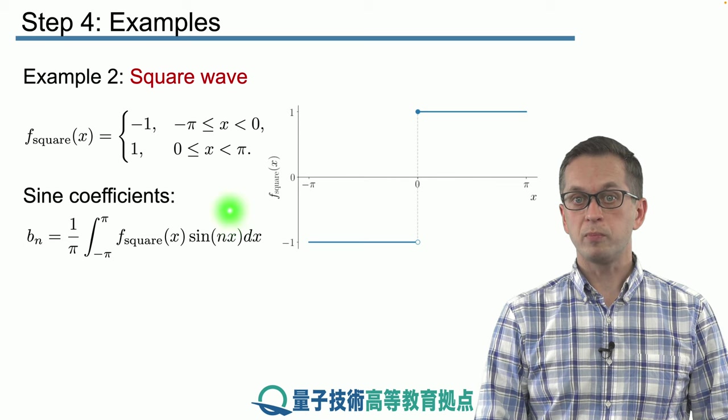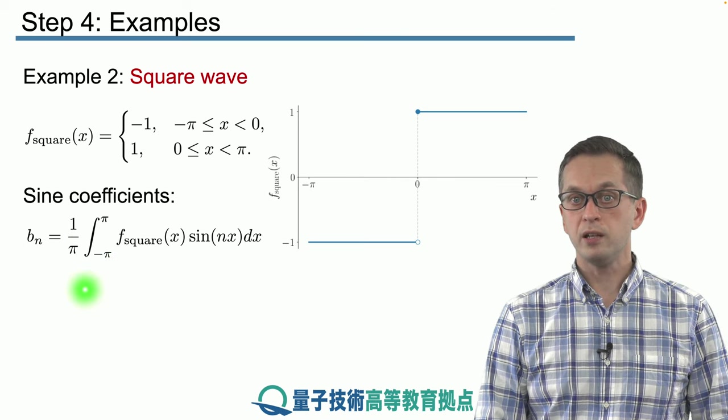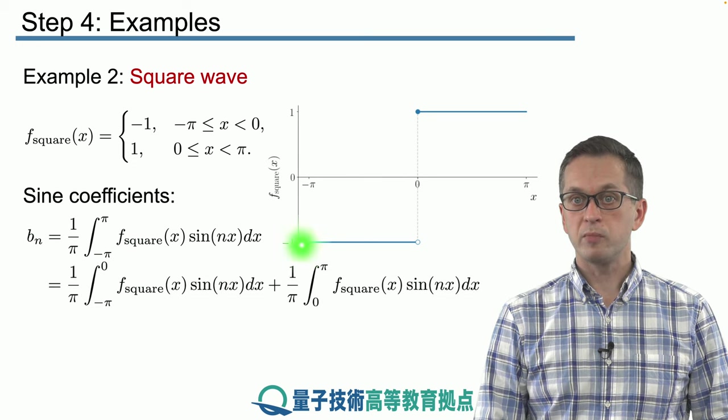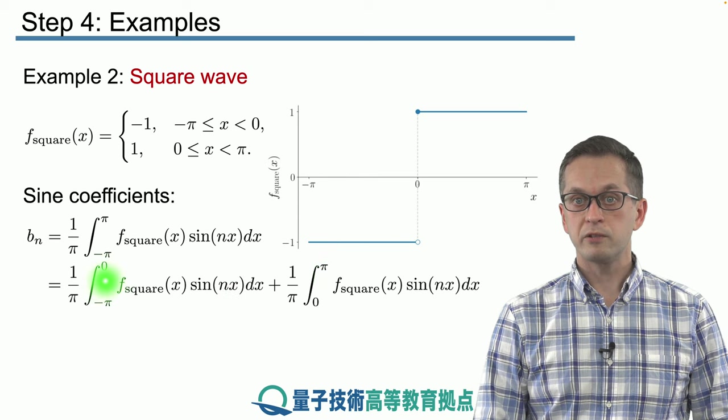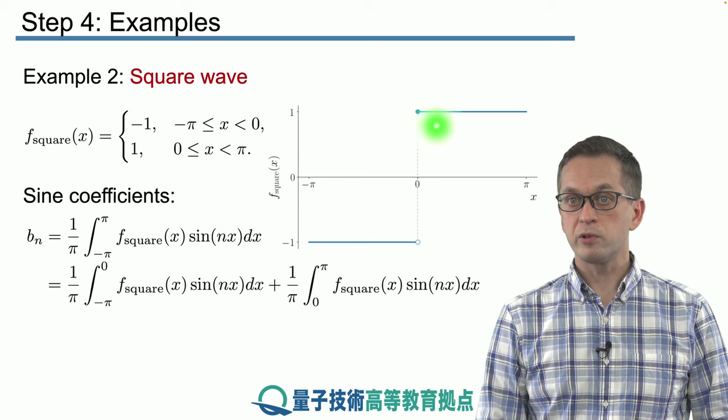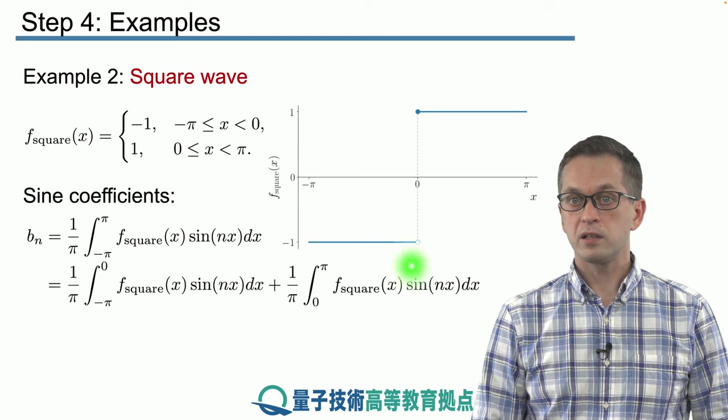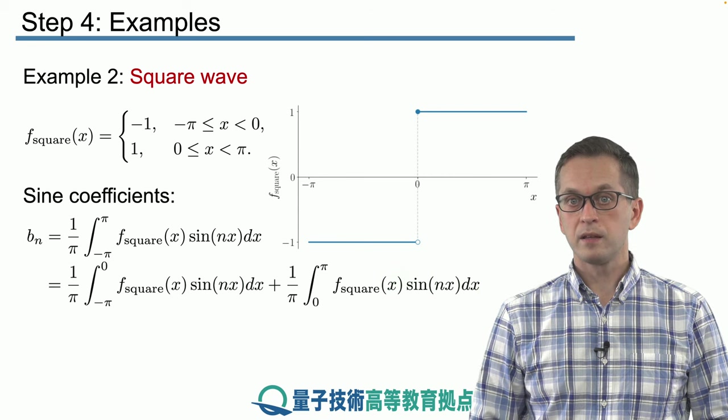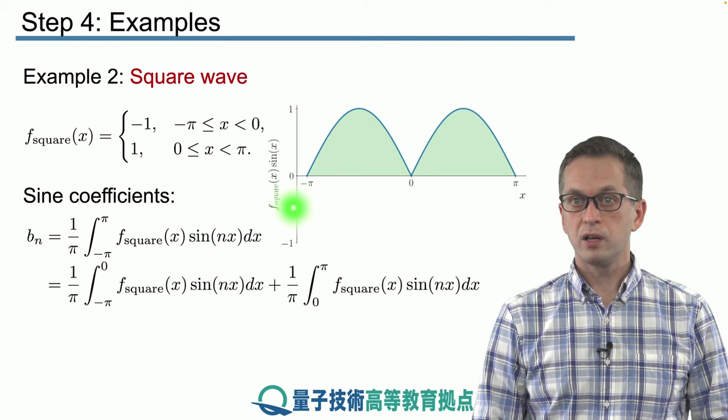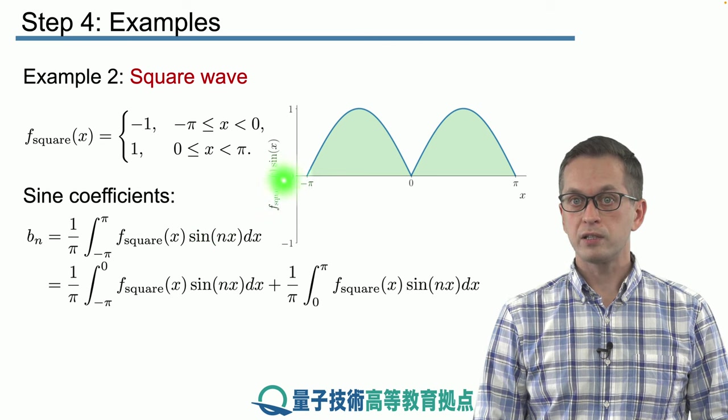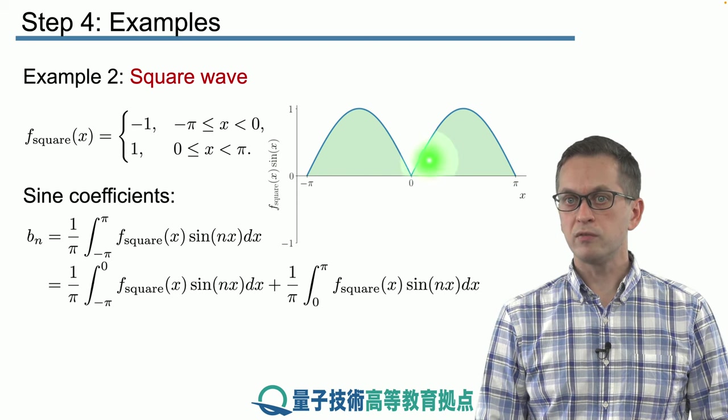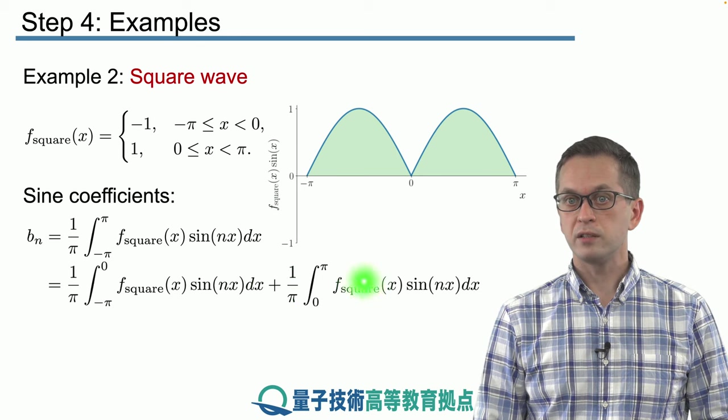So here we go. We plug it into our formula for the coefficients bn. And what we do is we split the integral. We integrate from minus π to 0, plus the integral from 0 to π. If we actually plot our function, so here we are plotting the square wave function multiplying sine of x, we see that the values of these two integrals are in fact equal.